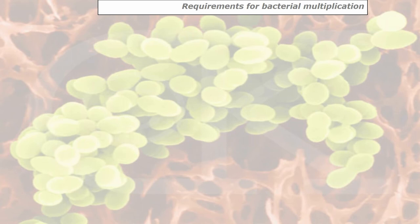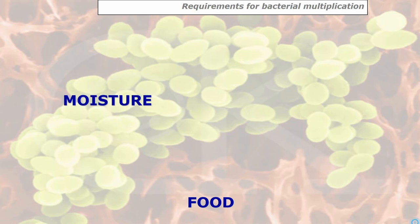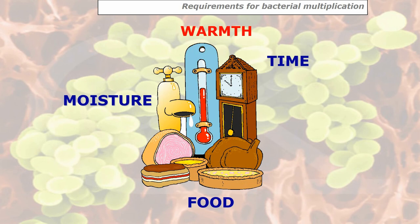It's like a jigsaw — if all four elements come together, you will get bacteria growing and eventually causing food poisoning. The four conditions necessary for bacterial growth are food, moisture, warmth, and time.